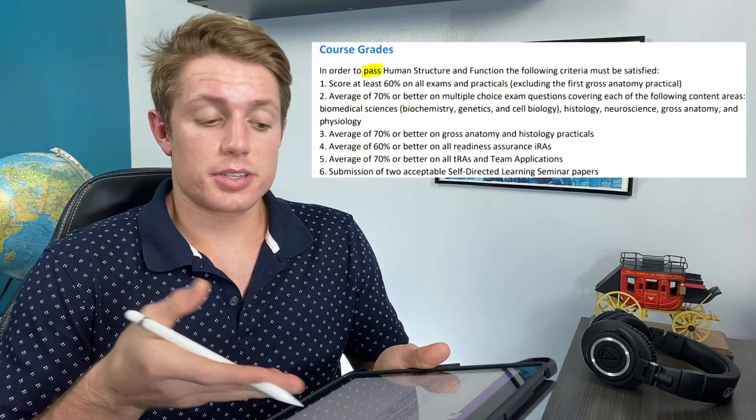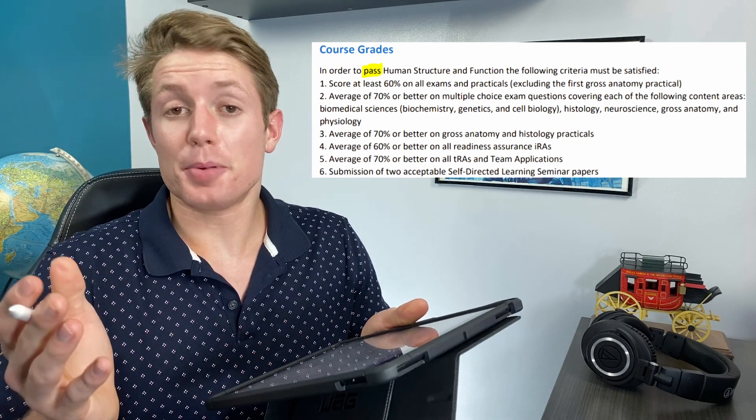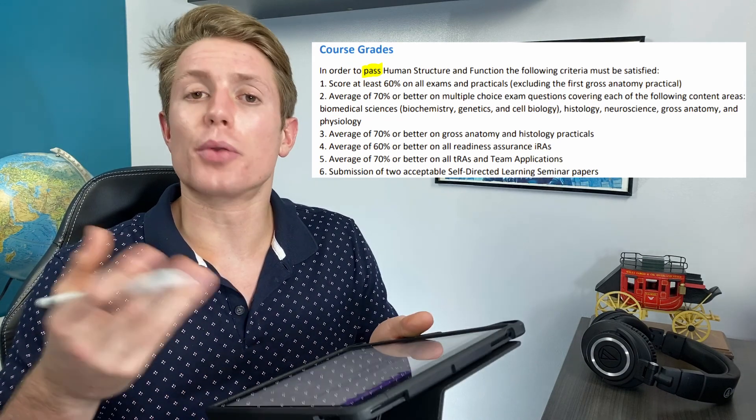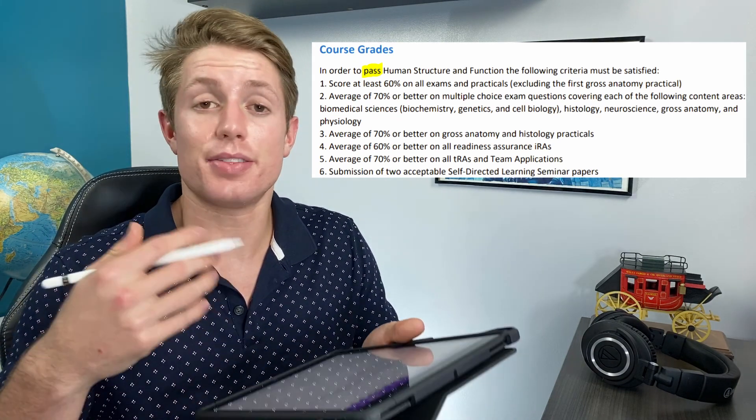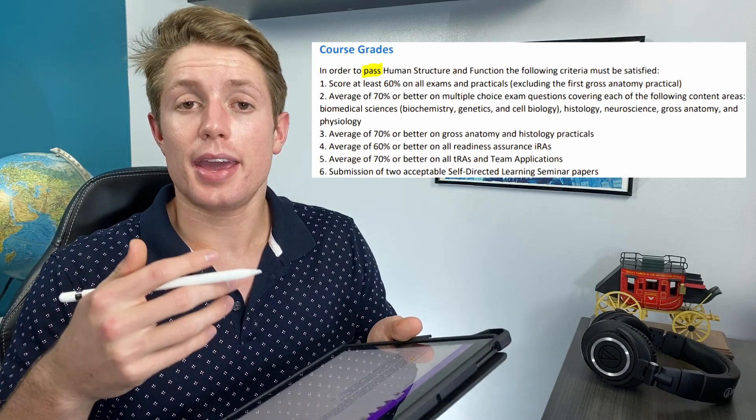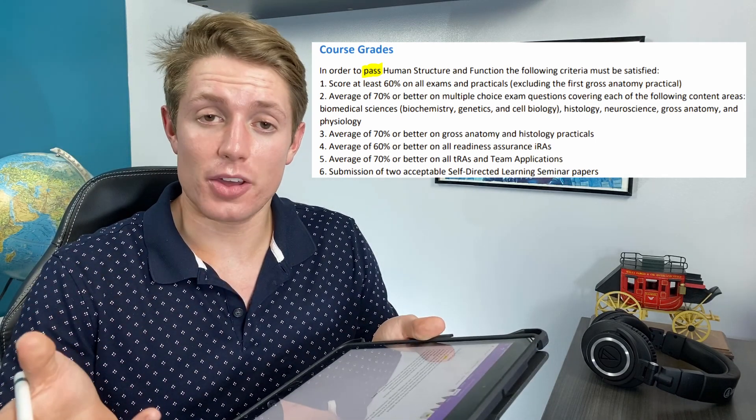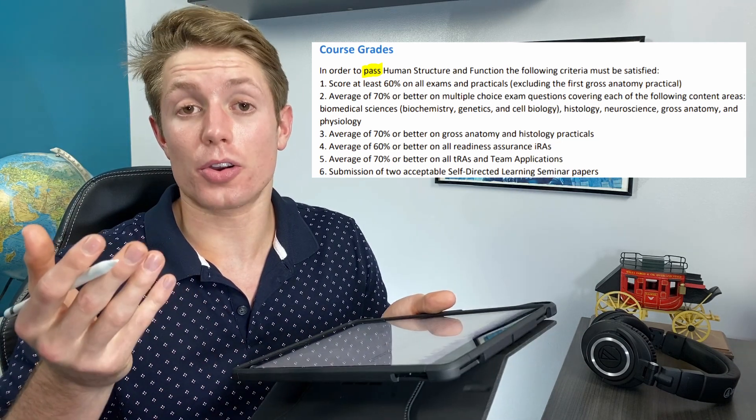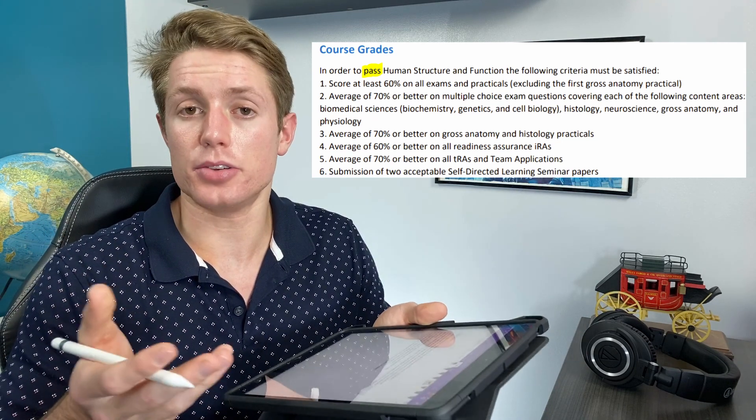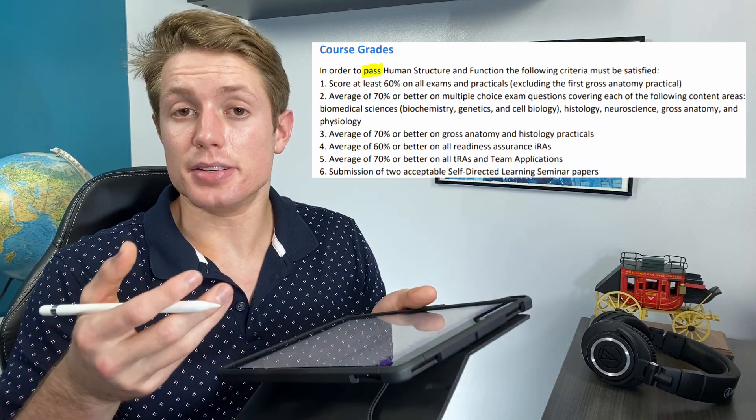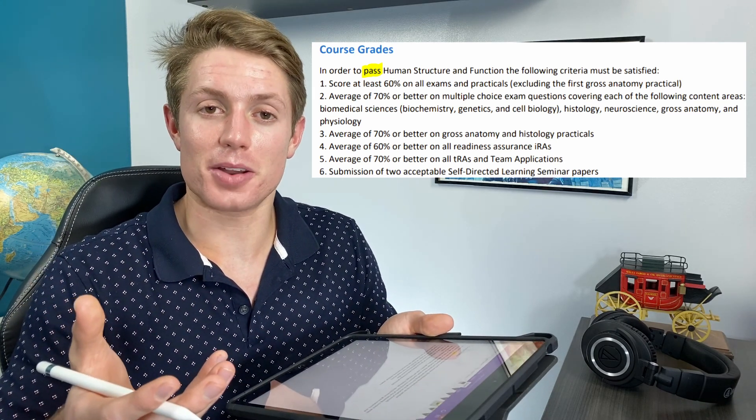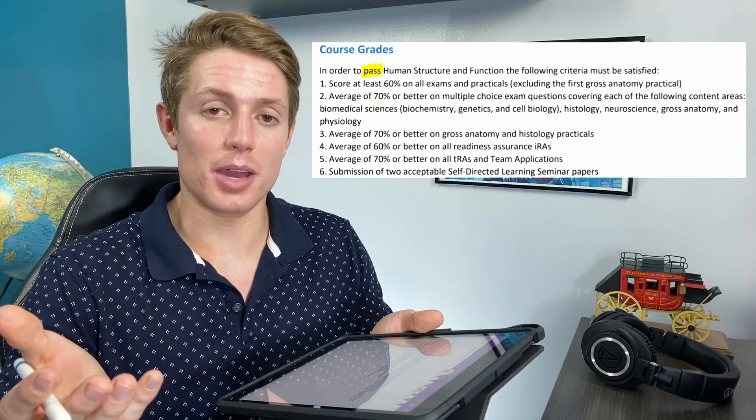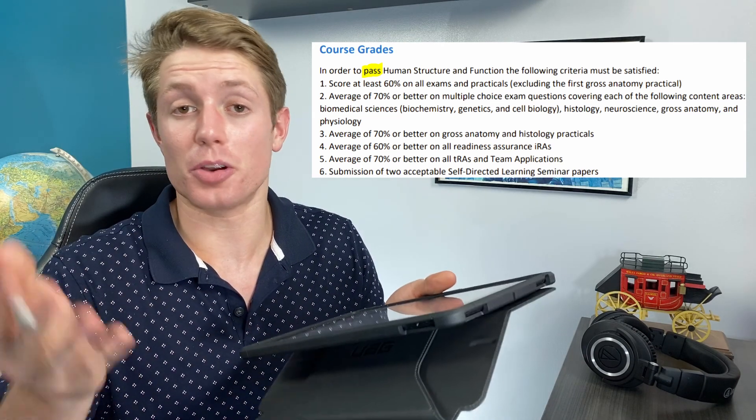And then the last category is just submitting two acceptable self-directed learning seminar papers. Honestly, I don't know a ton about these yet. I haven't gotten to those, and those come later in the semester, I guess. They're sort of like research paper type things, and they're not, they said they're not something to worry about. They're obviously something we have to do, and it's one of those things where I don't think anyone's going to fail these papers. That's not because they're super easy. It's just because all of the students that are at Duke are good students and are going to put effort into it. So it's something that I think you just have to put effort into and trust that you are an educated enough medical student that when you put effort into something, it has some good results.